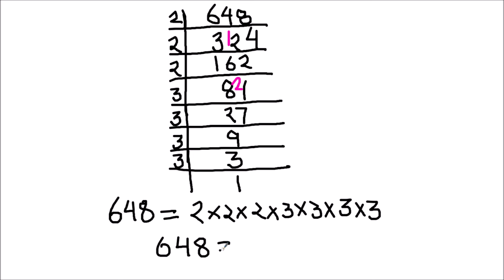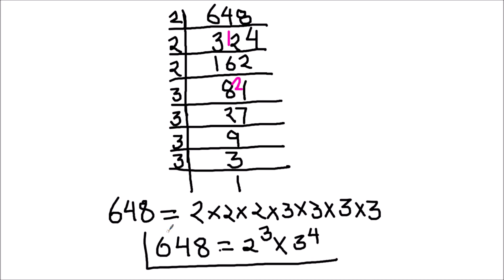Or in exponent form, we can write 648 as 2 cubed times 3 raised to the power of 4. These are all the prime factors of 648. This is how we can express 648 as the product of its prime factors.